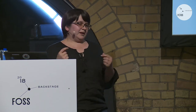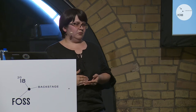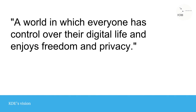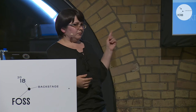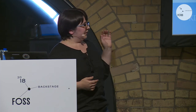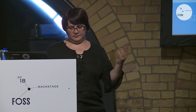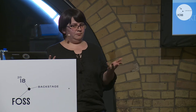So what we did was tackle exactly that problem first — we wrote down, after much discussion, what our vision actually is. We started that discussion in August 2015, and it went on until April 2016. The outcome was: 'A world in which everyone has control over their digital life and enjoys freedom and privacy.' This is what we want to strive for and what we want to provide to our users. It was still relatively easy to get agreement on, because it was high level enough for people to see themselves in it.